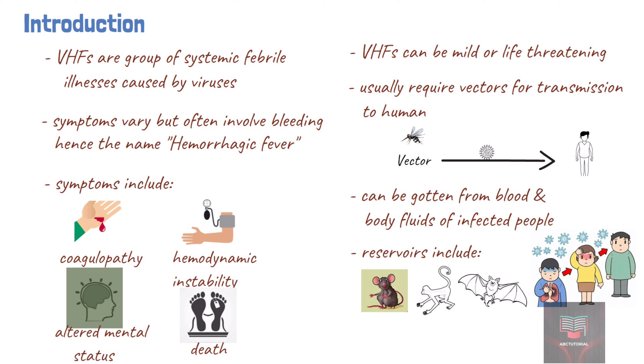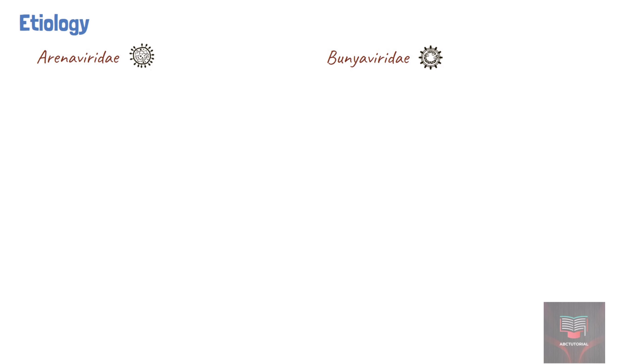Given their zoonotic nature, these diseases are generally confined to the endemic areas where their hosts live. Viruses implicated in viral hemorrhagic fevers and the diseases they cause are grouped by four families of viruses: Arenaviridae, Bunyaviridae, and Flaviviridae family.